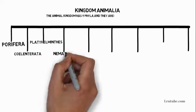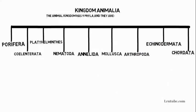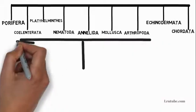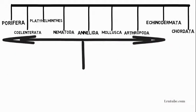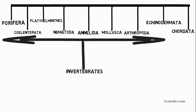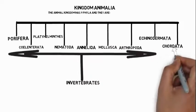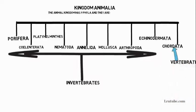The nine phyla of the animal kingdom are Porifera, Coelentrata, Platyhelminthes, Nematoda, Annelida, Mollusca, Arthropoda, Echinodermata, and Chordata. These phyla can be placed into two sub-phyla: invertebrates and vertebrates. Out of all nine phyla, only Chordata contains vertebrates; the remaining eight are all invertebrates.